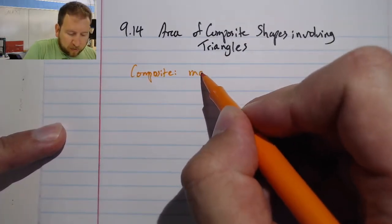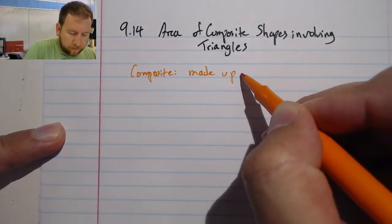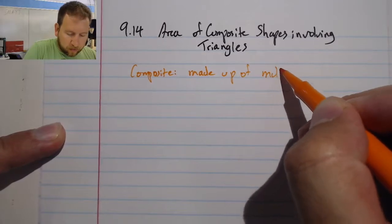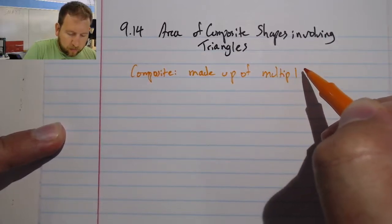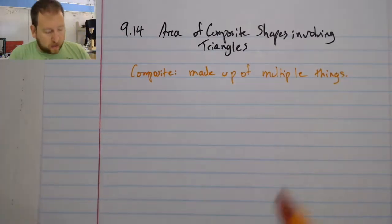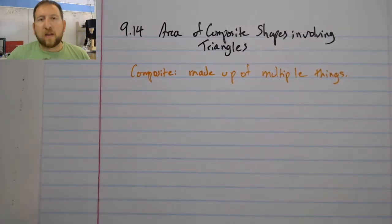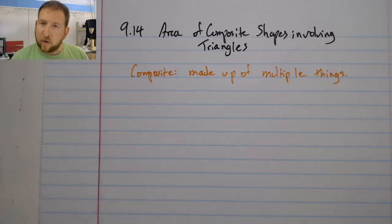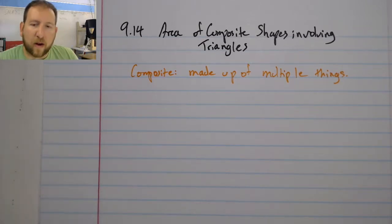And that means made up of multiple things. So in this section we're going to look at when we're finding the area of not just a clear parallelogram or a triangle, but instead when they are combined.